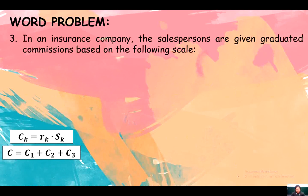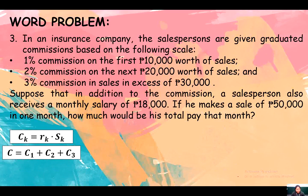Third problem: In an insurance company, salespersons are given graduated commissions based on the following scale: 1% commission on the first 10,000 worth of sales, 2% commission on the next 20,000 worth of sales, and 3% commission on sales in excess of 30,000. Suppose that in addition to the commission, the salesperson also receives a monthly salary of 18,000. If he makes a sale of 50,000 in one month, how much would be his total pay that month?